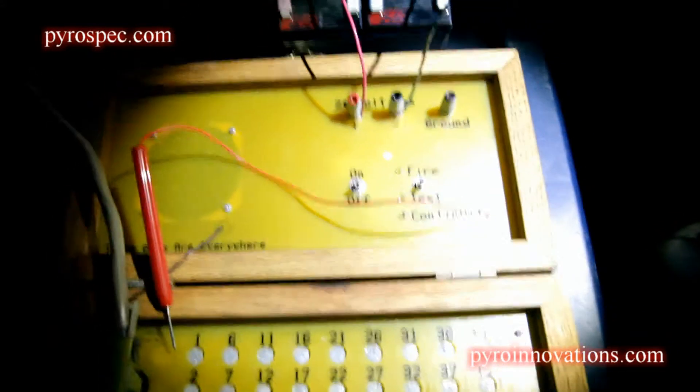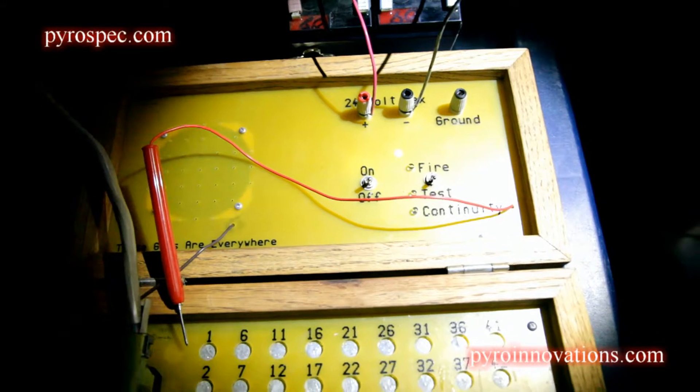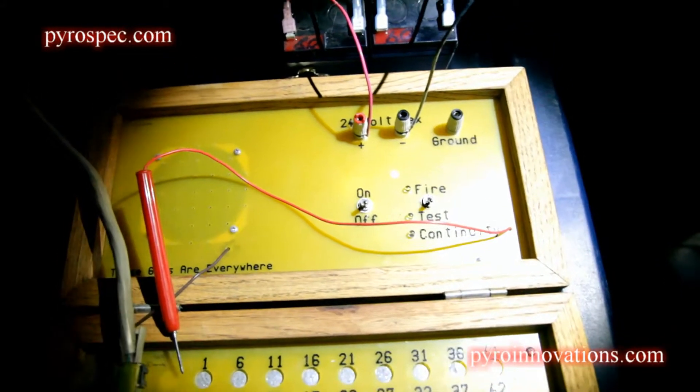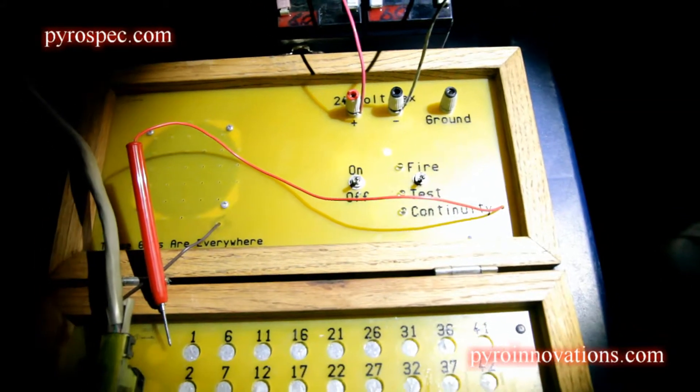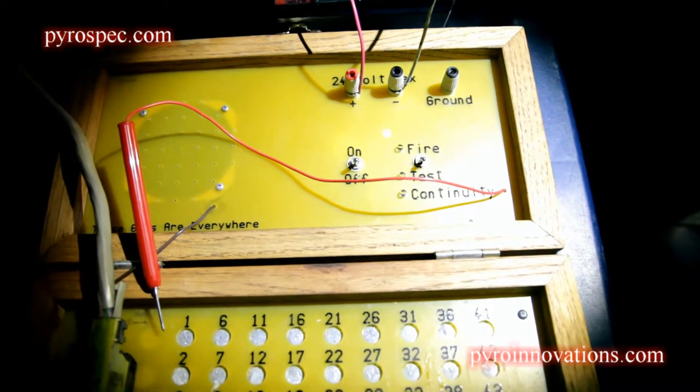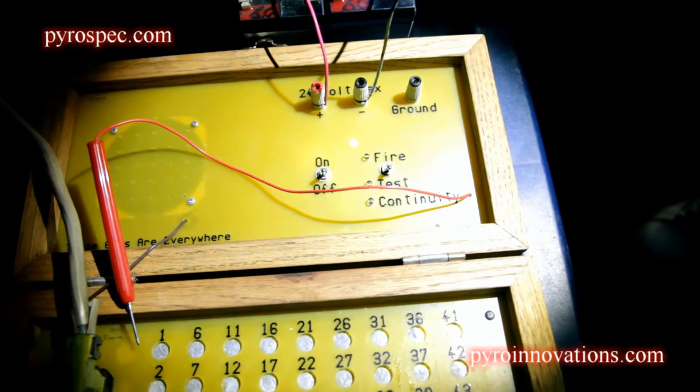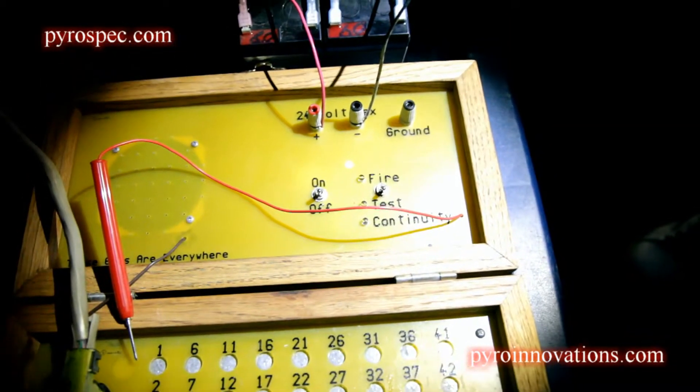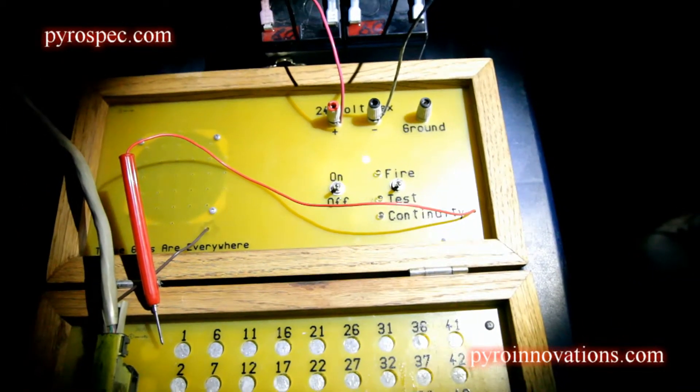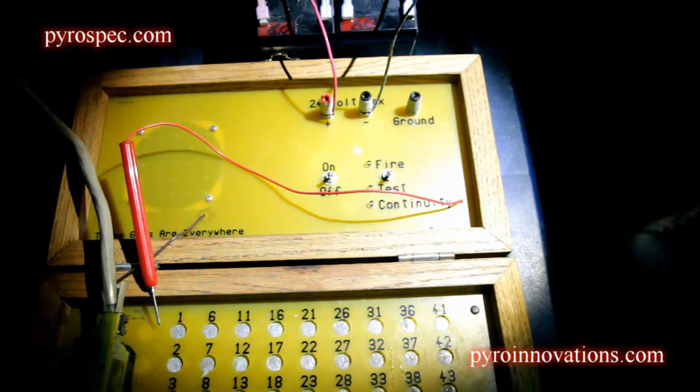It's very important that once you're ready to arm the system, before you do so, you make sure your entire site is secure, nobody's breached your firing perimeter, and the order to arm the system can only come from the operator in charge, bearing in mind that typically it's not the operator actually firing the display.